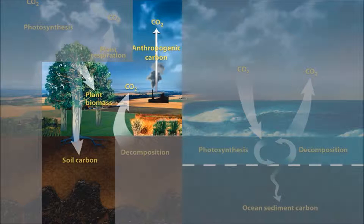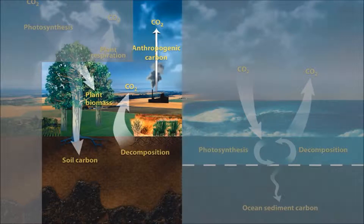By the way, on this diagram, 'anthropogenic' is just another way of saying caused by humans. The majority of the leaves and general dead biological material is going to be broken down by detritivores, like earthworms and wood lice, and then decomposers, which are bacteria and fungi. And these creatures will respire, releasing carbon dioxide back into the atmosphere.